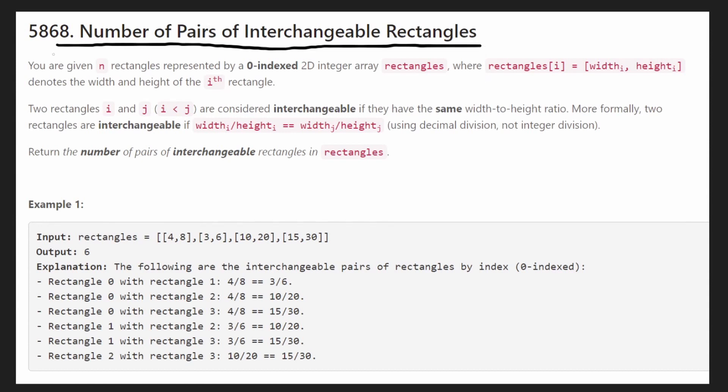This problem isn't too bad but we do need to know a tiny bit of math related to combinations. We are given n rectangles and for each rectangle we're given its width and its height. We're also given the width-to-height ratio which is basically the width divided by the height using decimal division, not integer division. We want to return the number of pairs of interchangeable rectangles where an interchangeable rectangle is basically a rectangle that has the same ratio as another rectangle.